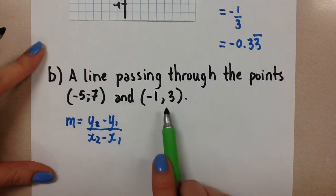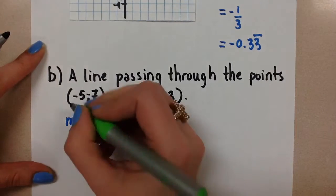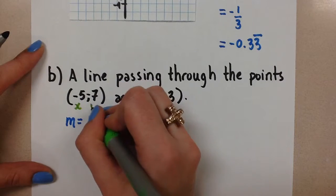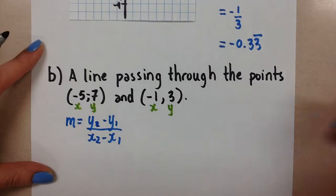So when we look at the two points we have, let's call this point 1 and this point 2. We know that this is an x value, and this is a y value, and this is an x value, and this is a y value.